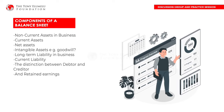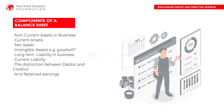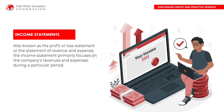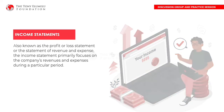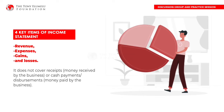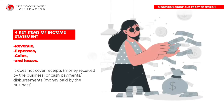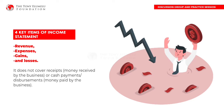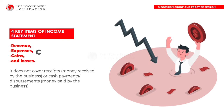Income statements, also known as the profit or loss statement or the statement of revenue and expense, primarily focus on the company's revenues and expenses during a particular period. The income statement focuses on four key items: revenue, expenses, gains, and losses. It does not cover receipts — that is, money received by the business — or cash payments or disbursements, that is, money paid by the business.